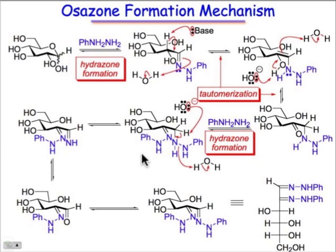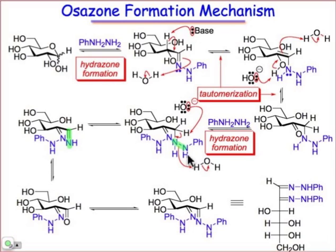What happens next is a base-promoted process of fragmentation at position one. We're essentially breaking that weak nitrogen-nitrogen bond as our leaving group. It's a type of beta elimination where we generate a new carbon-nitrogen double bond with loss of the molecule of aniline. So this is the step where aniline is formed.